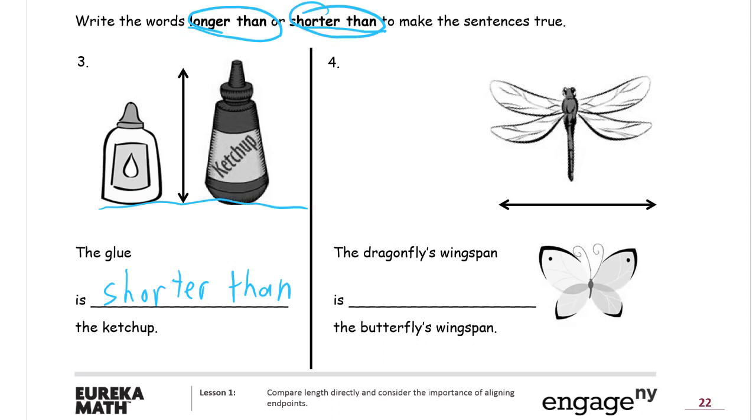The dragonfly's wingspan looks like these are lined up for that as an endpoint. And the dragonfly's wingspan looks like it's a lot longer than the butterfly's wingspan.